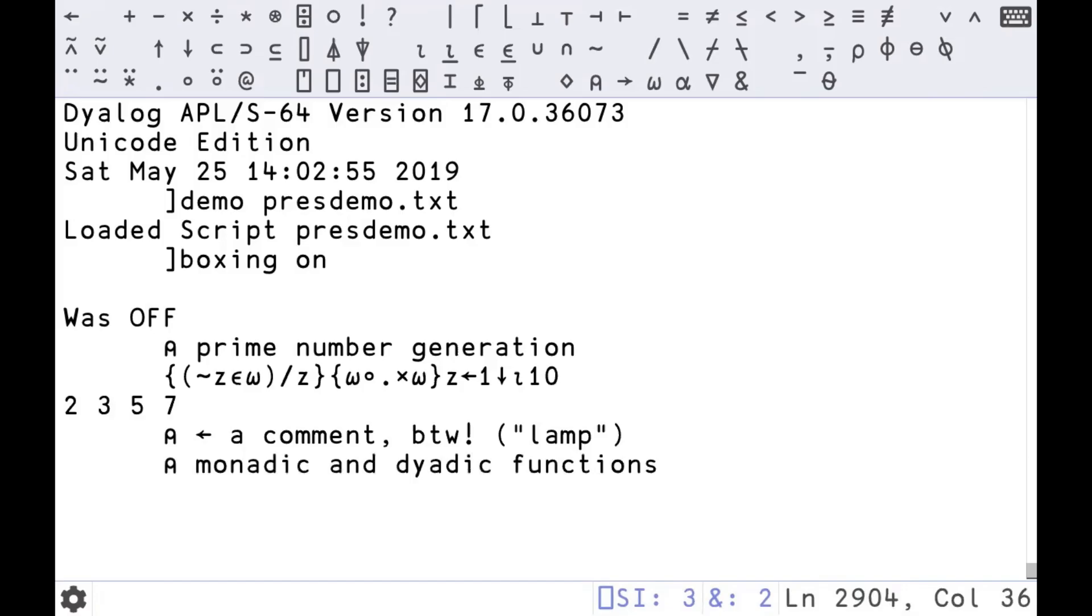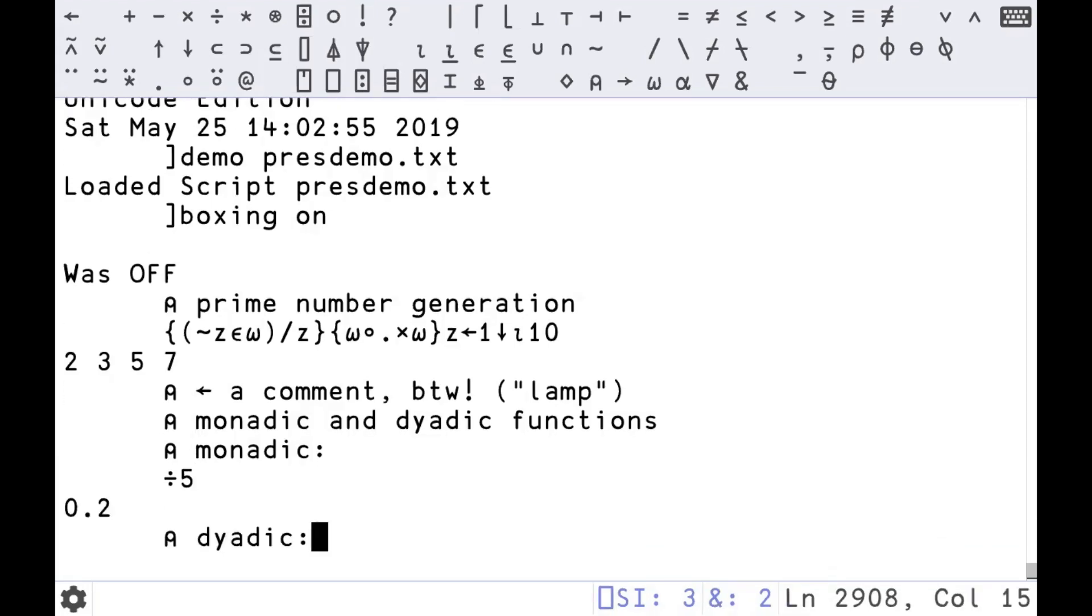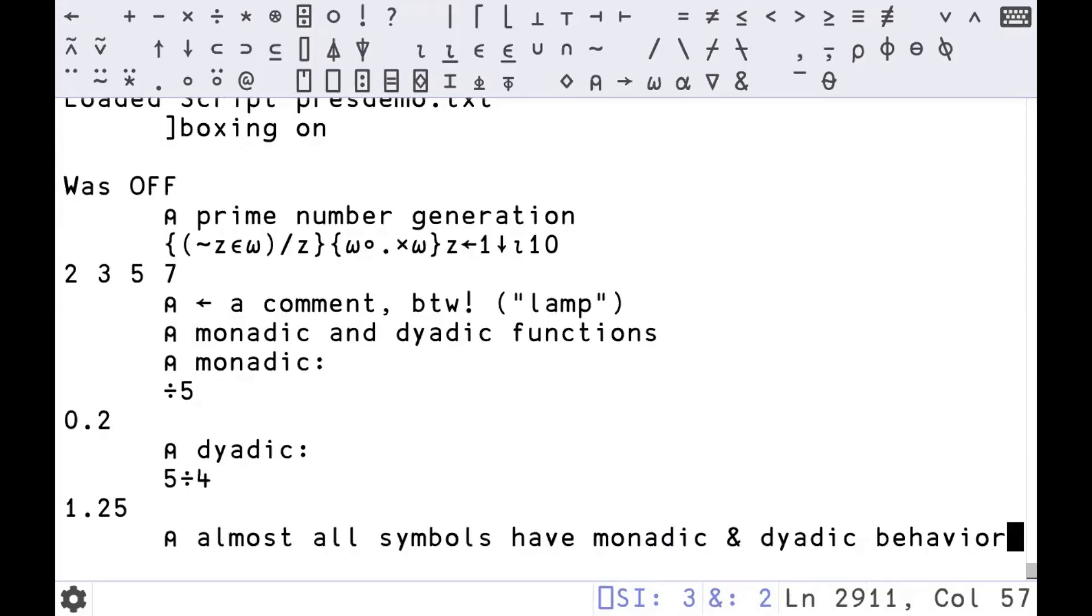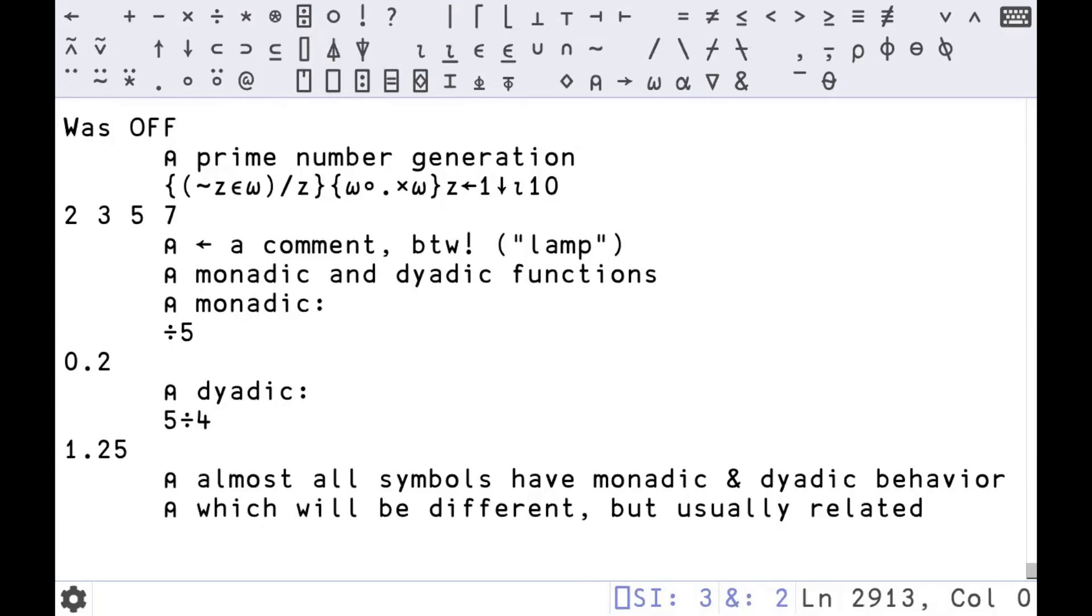The first bit of syntax I'm going to tell you is monadic and dyadic functions. Those are pretty technical terms. If you're familiar with monads from Haskell or something, this is completely different, far simpler. So get it out of your head. This symbol means divide. This is the monadic application of divide. Monadic means it takes one argument, and when it takes one argument, that will be the value on the right of the symbol. So divide five in monadic form is just the inverse of five, 0.2. Dyadic just means it takes two variables. When it's dyadic, it'll be on the left and right side. So here divide is five divided by four, 1.25. Basically all of those symbols will have monadic and dyadic behavior, and they will be different but related. The symbols are pretty mnemonic when you get used to them.